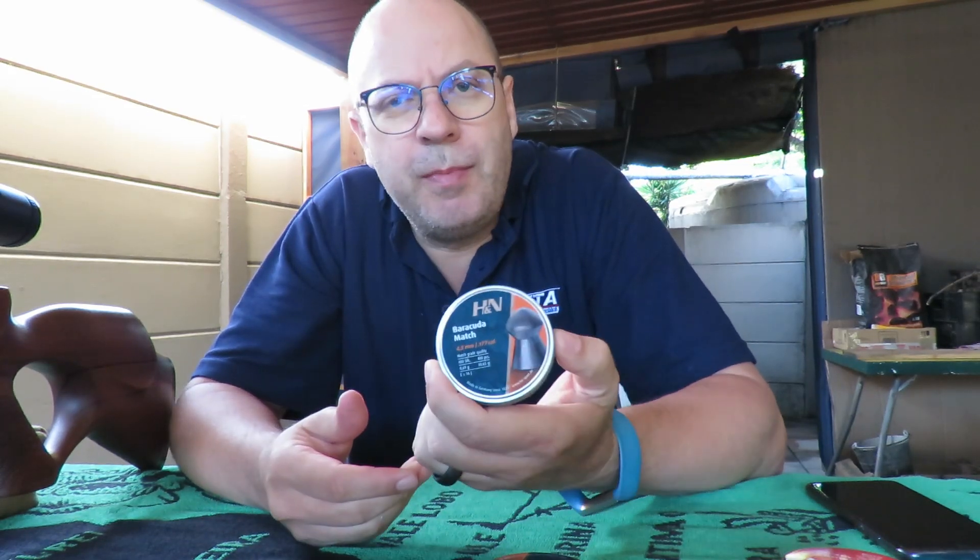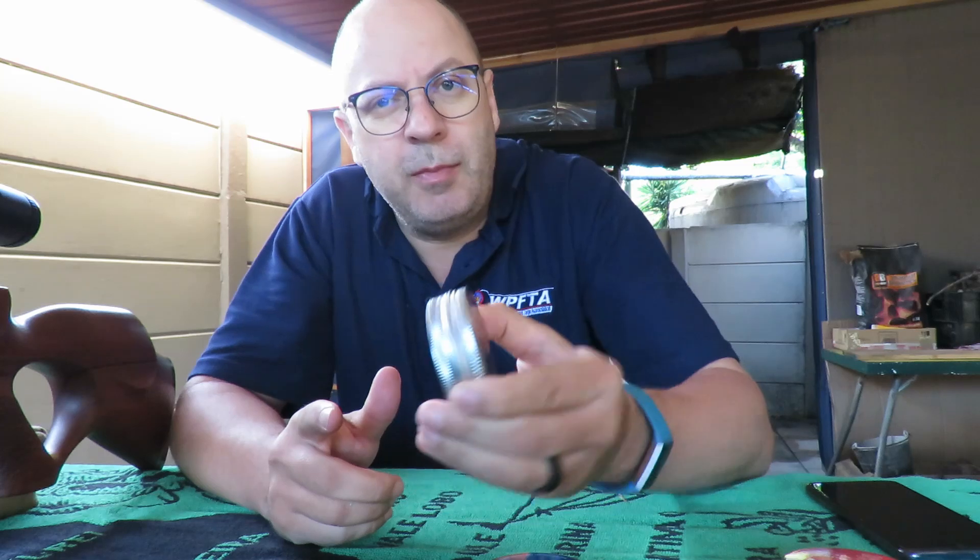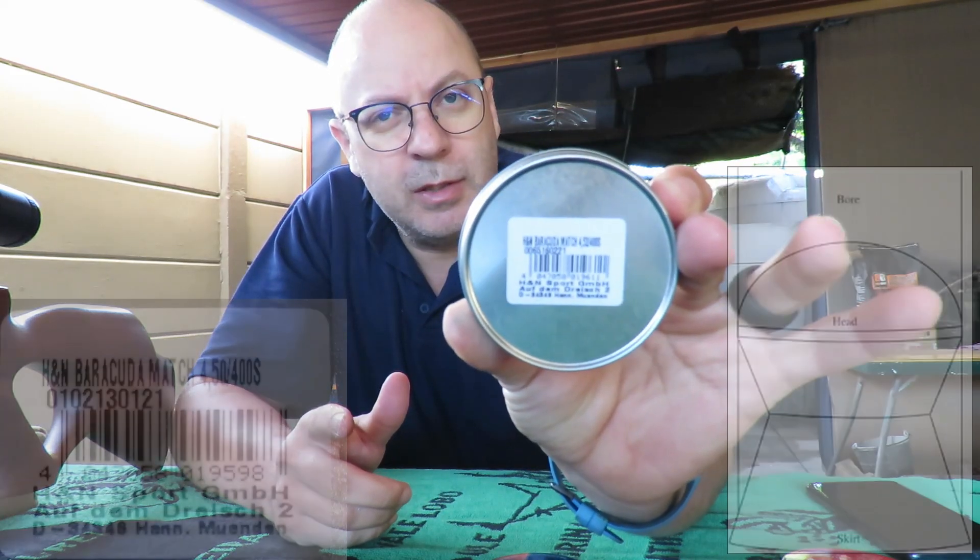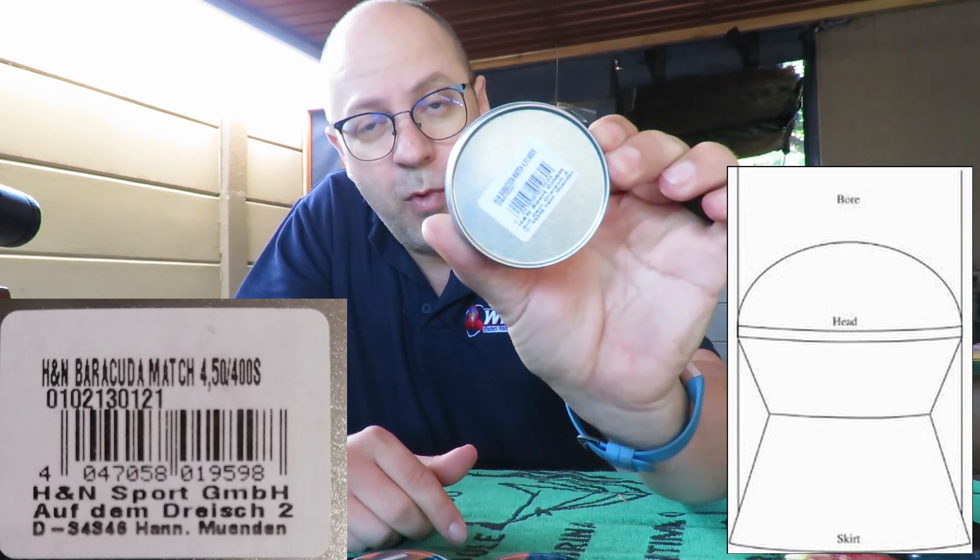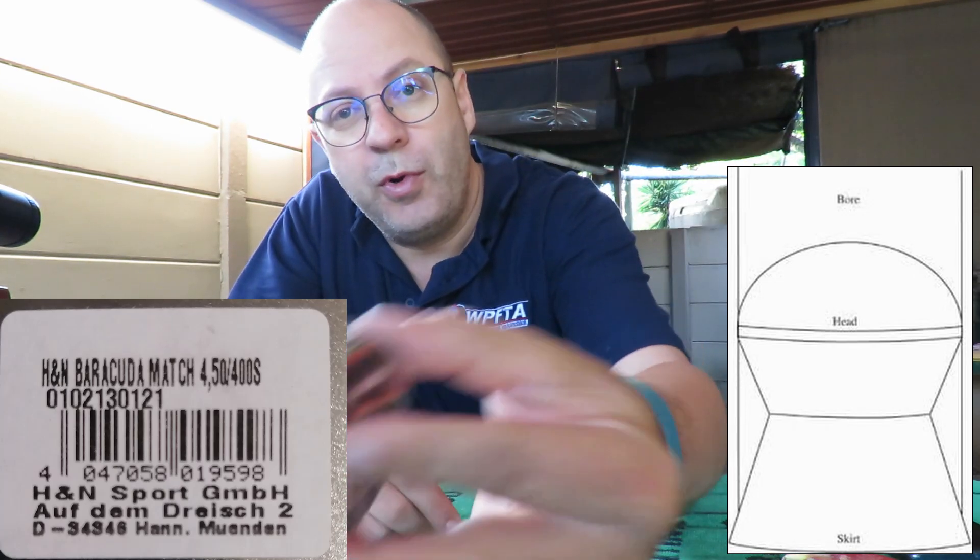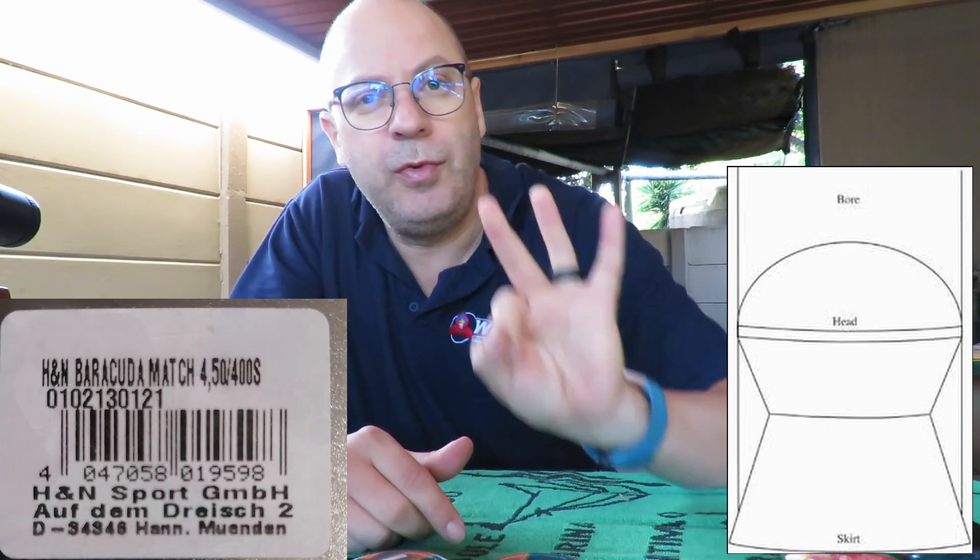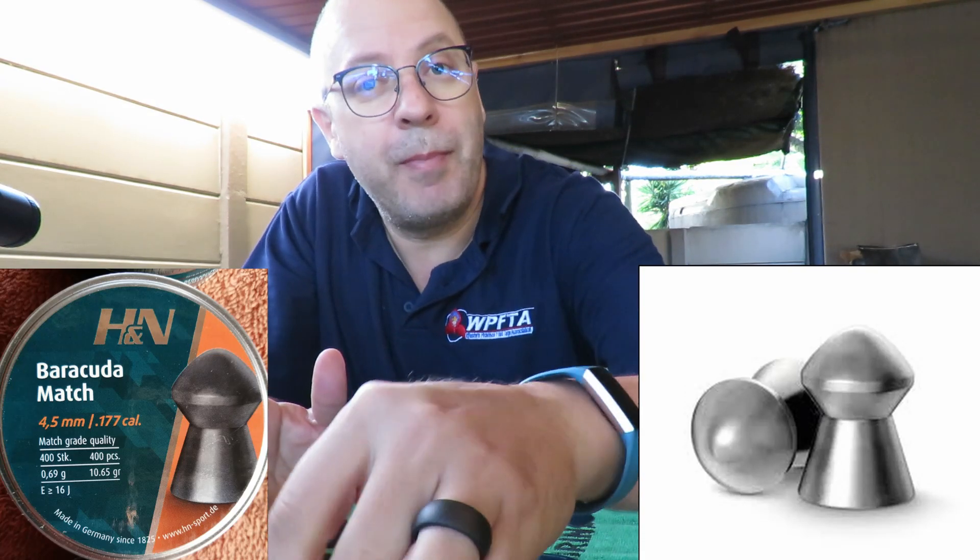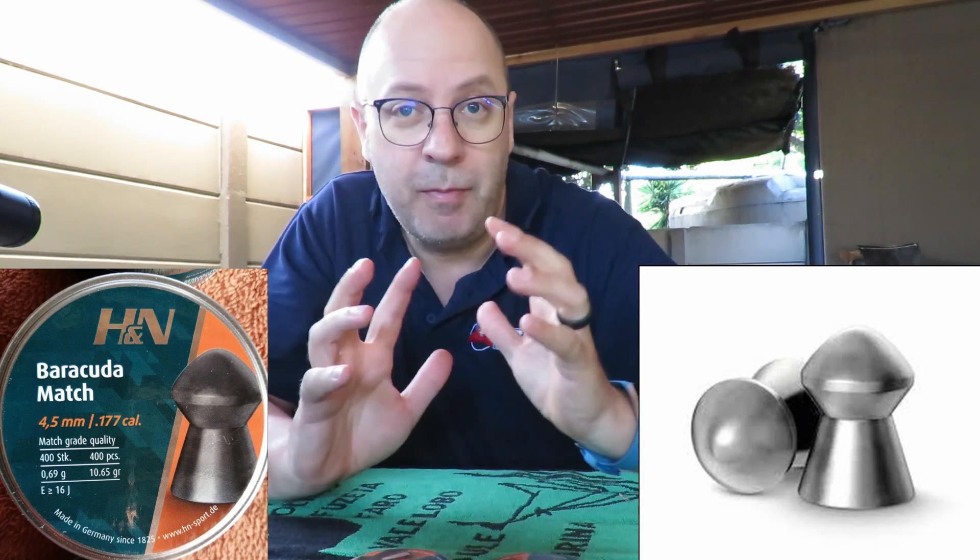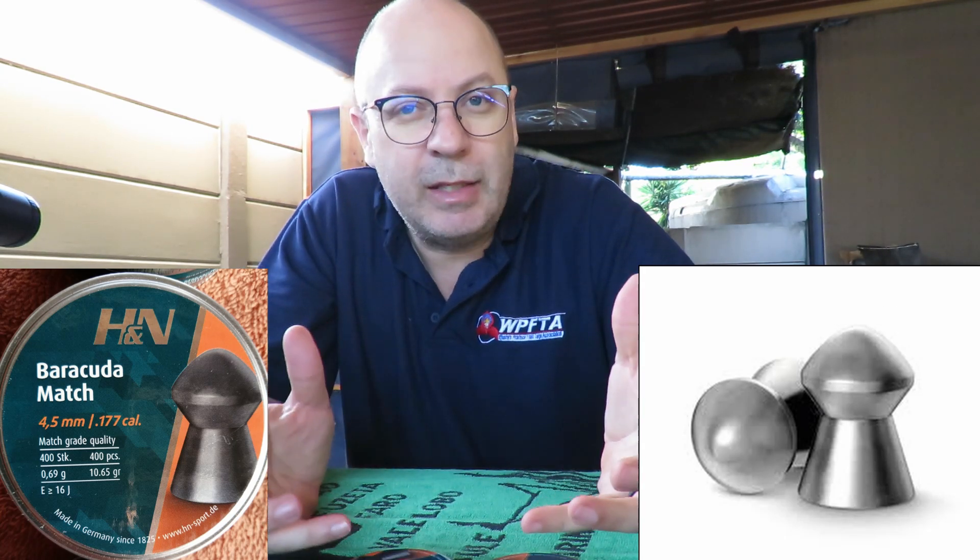Today I'm gonna shoot a couple of different pellets starting with the Barracuda matches. I know I did this in a previous video, but the difference today is I'm gonna shoot them in different head sizes: 4.52, 4.51, and 4.50. I'm gonna shoot them through three different guns, and I know my HW is a little bit pellet fussy, so hopefully I'll get the pellet or head size that is perfect for that little gun because I need that gun for competition purposes.